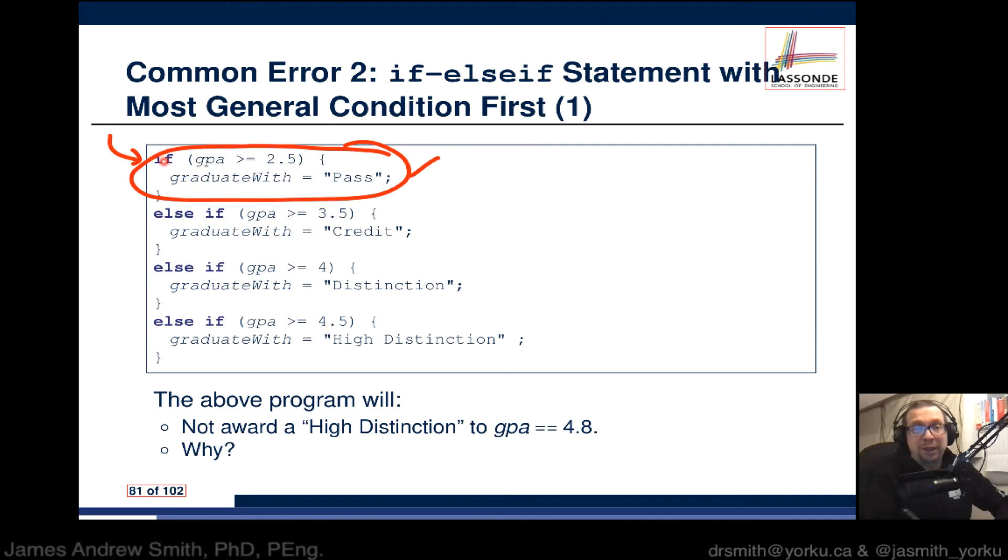But because of the way if-else-if works, this will be ignored. That will be skipped. That will be ignored and skipped as well. So none of this will be examined. It basically says, okay, this is good, now we're going to go past it. So this is a problem.